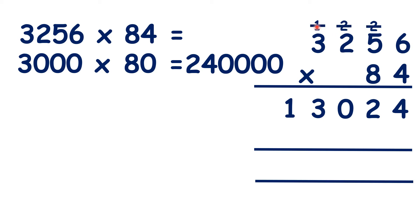Now, we can cross out our working and write a 0 in the units of our second answer line. Now, 6 times 8 is 48, 5 times 8 is 40, plus 4 is 44, 2 times 8 is 16, plus 4 is 20, and 3 times 8 is 24, plus 2 is 26.